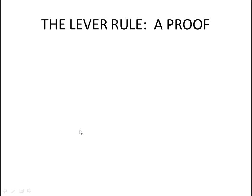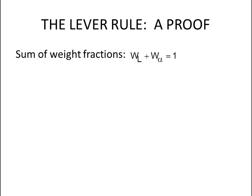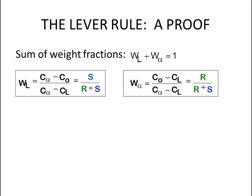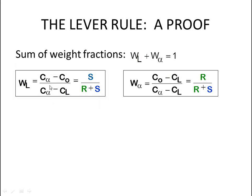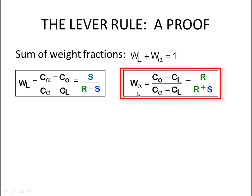Now let's discuss the lever rule. From the lever rule, we know that the sum of weight fractions equals one: weight fraction of liquid plus weight fraction of solid equals 1. The weight fraction of liquid equals the composition of the solid minus the composition at a given temperature, divided by the composition of the solid minus the composition of the liquid. Using these formulas, we can find the weight percentage of both the liquid and solid solutions.